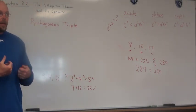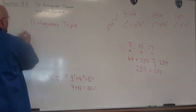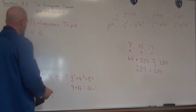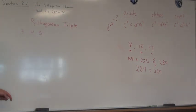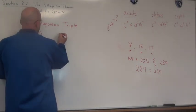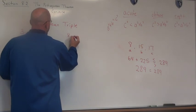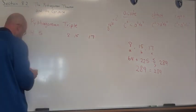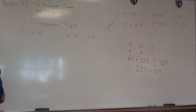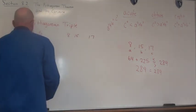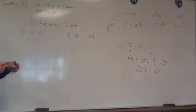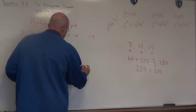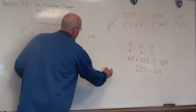Pythagorean triples can really shorten our work. Here are some of the common triples: the 3, 4, 5 triple; the 8, 15, 17 triple; the 5, 12, 13 triple from our bell work; and 7, 24, 25. You're going to start seeing them because these are common triples.